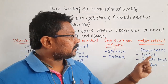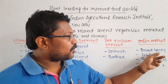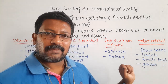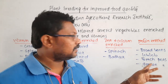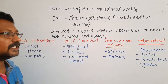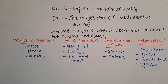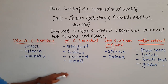For protein-enriched crops, examples include broad beans, lablab beans, French peas, and garden peas, all enriched with protein. These are examples of vegetables enriched with minerals and vitamins — what we call biofortified vegetables.